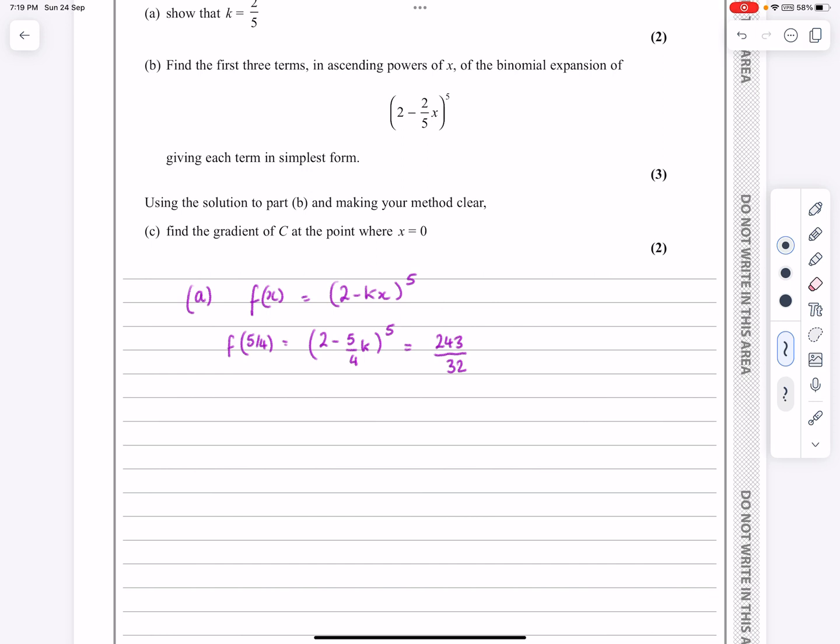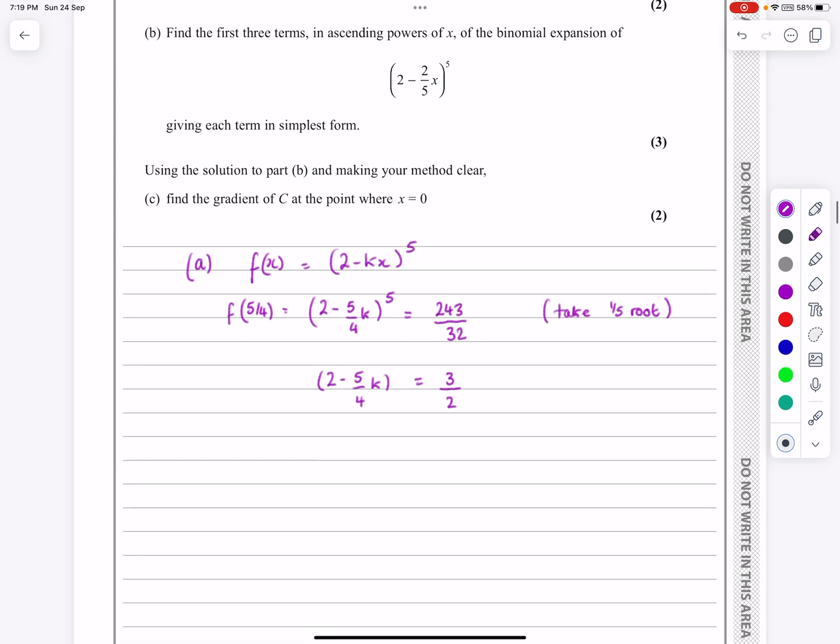Okay, so what I can do is, and that's why they've chosen 243 over 32, if I take the 5th root of both of these, I'm going to get (2 minus 5/4)k is equal to, the 5th root of 243 is 3, and the 5th root of 32 is 2. So if you want to say take 5th root, don't need to say that, but just to make it a little bit simpler then.